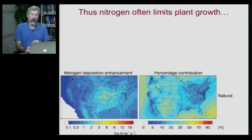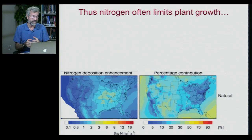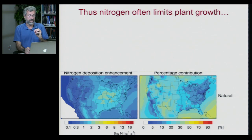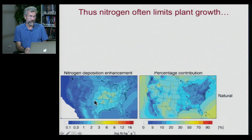Nitrogen often limits plant growth. When we think about carrying capacity of different systems, there's only so much nitrogen to support the plants. In a natural system, nitrogen is deposited slowly by the rhizobia and legumes — the net deposition is on the order of just a couple of kilograms per year per hectare, which is about a hundred square meters, so it's pretty low.